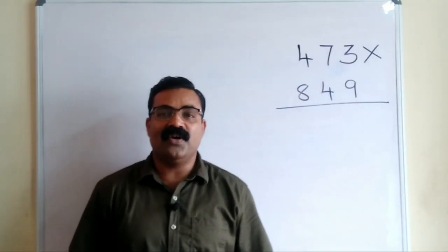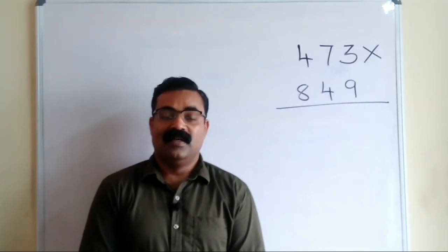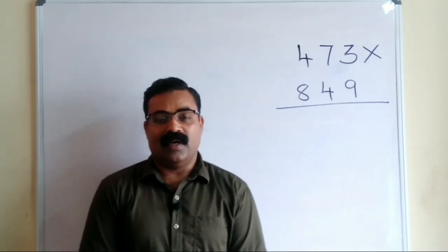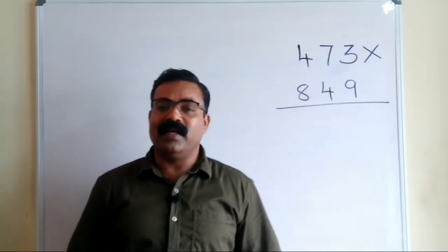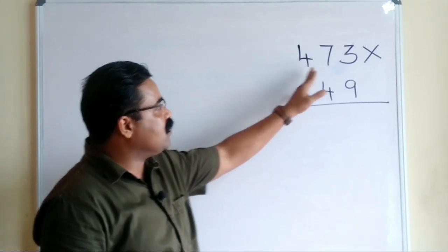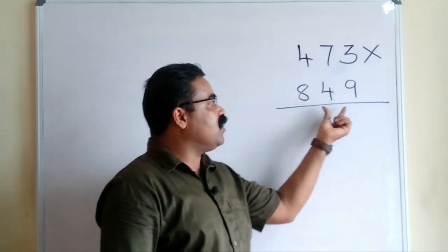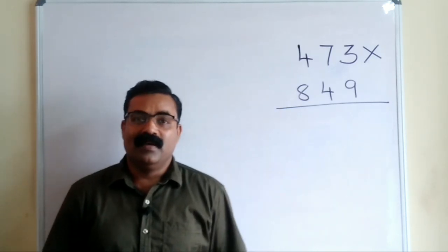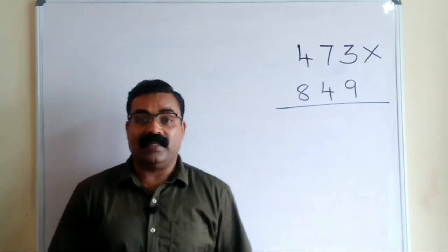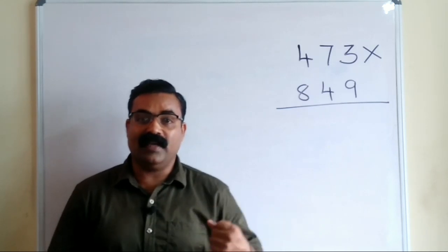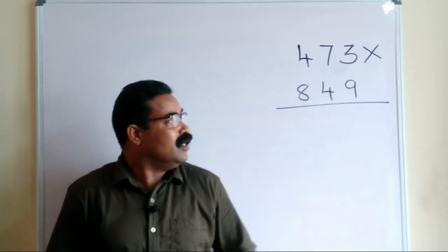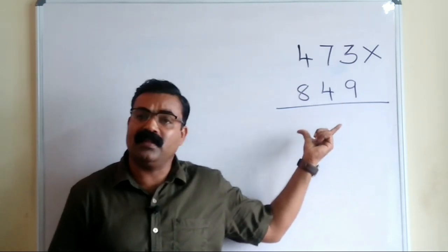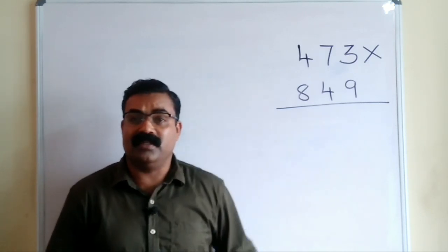Good morning friends! I have written on the board a three-digit number multiplied by another three-digit number: 473 multiplied by 847. I'm sure students you all know how to multiply this using the school method, but today we are going to do it using the Vedic method — that is the speed math method. Using Vedic methods you can solve this within 10 seconds, whereas the conventional school method will take more than two minutes.